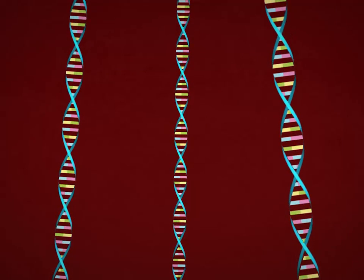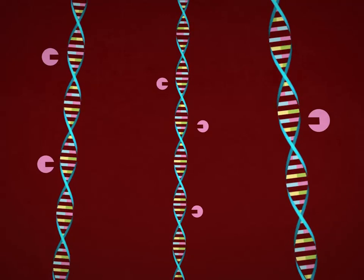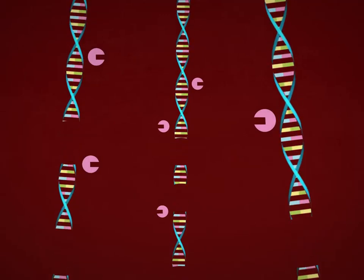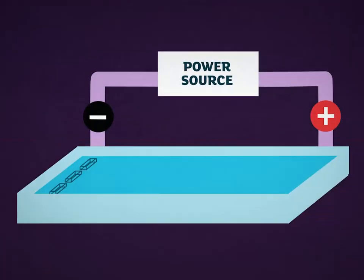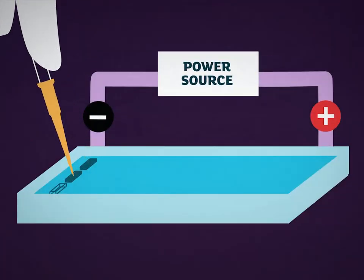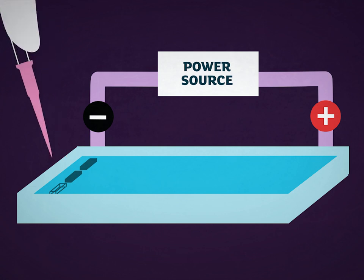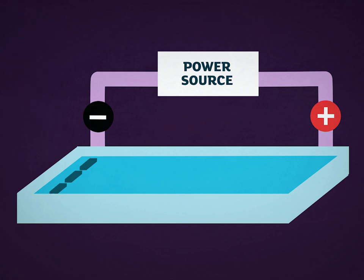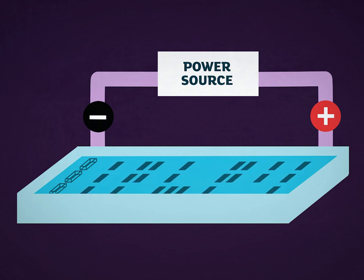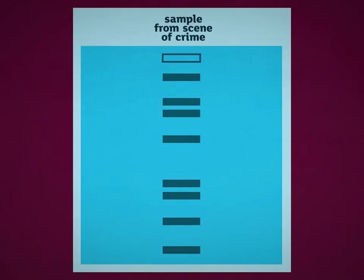First they extract DNA from the cells. They use enzymes to cut the DNA into shorter fragments. The fragments are placed into a well in a gel. They are separated using an electric current. Different sized fragments travel different distances in the gel. The smallest fragments travel the furthest. A pattern of bands is produced.